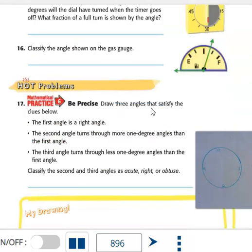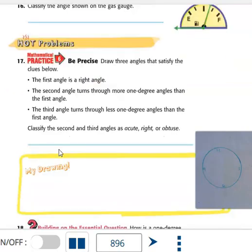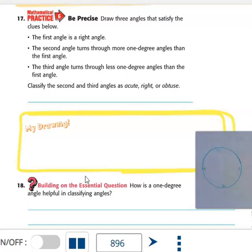Here you're drawing your own angles. The first angle is a right angle, so draw that. The second angle turns through more one-degree angles than the first, so that tells you right away whether it's acute, right, or obtuse. Draw one of those. The third angle turns through less one-degree angles than the first angle. That will tell you whether it's acute, right, or obtuse. Then you're going to label. They've given you right for the first one, which one is acute and which one is obtuse. I'll expect your drawings to be in this section of your work here.